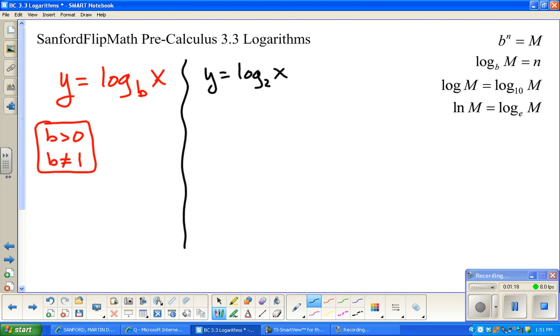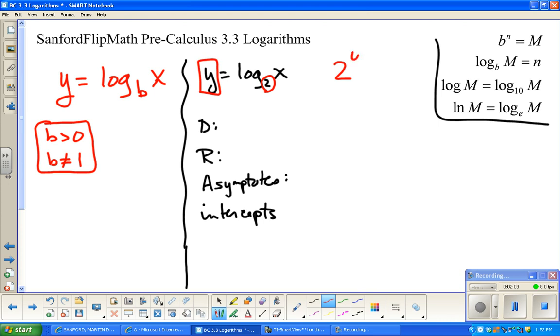Let's look at a specific example, log base 2 of x. I want to be able to talk about domain, range, any asymptotes, any weirdness going on in this function, and point out any intercepts. I'm going to switch this into exponential form. The base is 2, the exponent is the answer for the log. Remember that logs are exponents. So I'm going to make a little table of values.